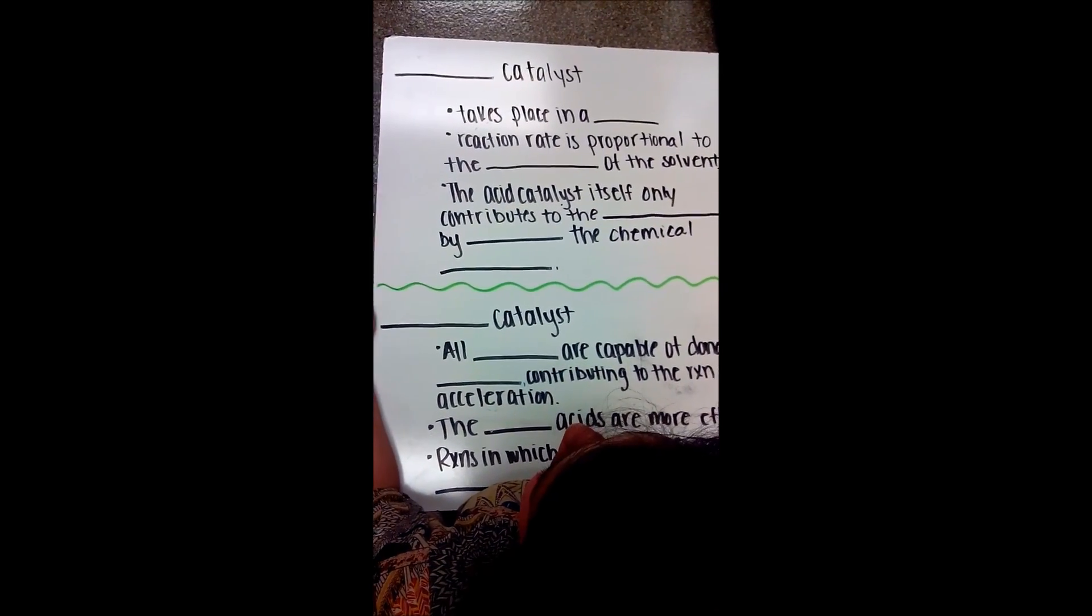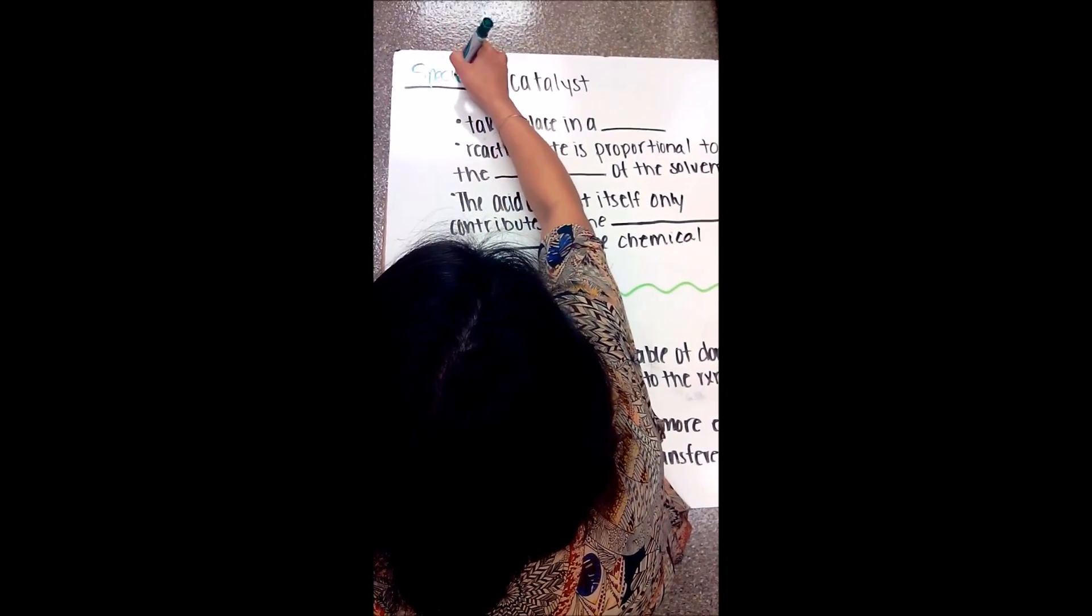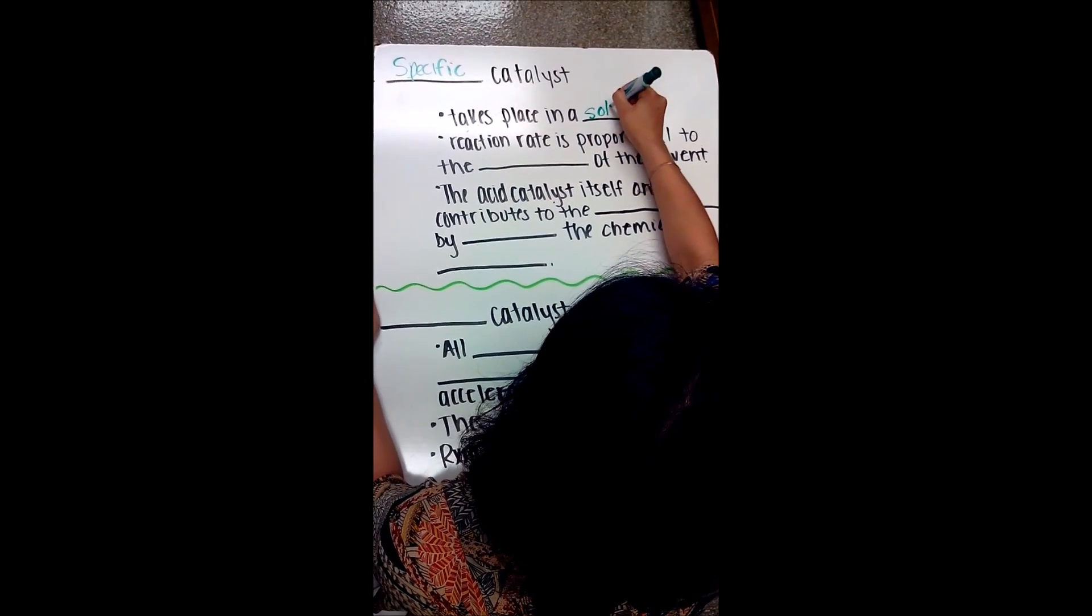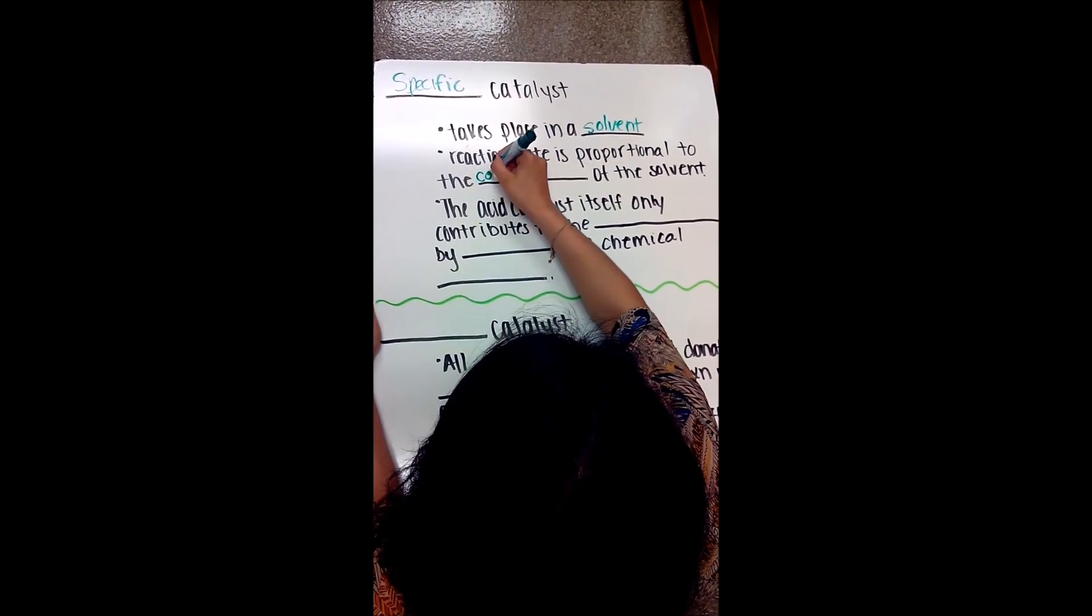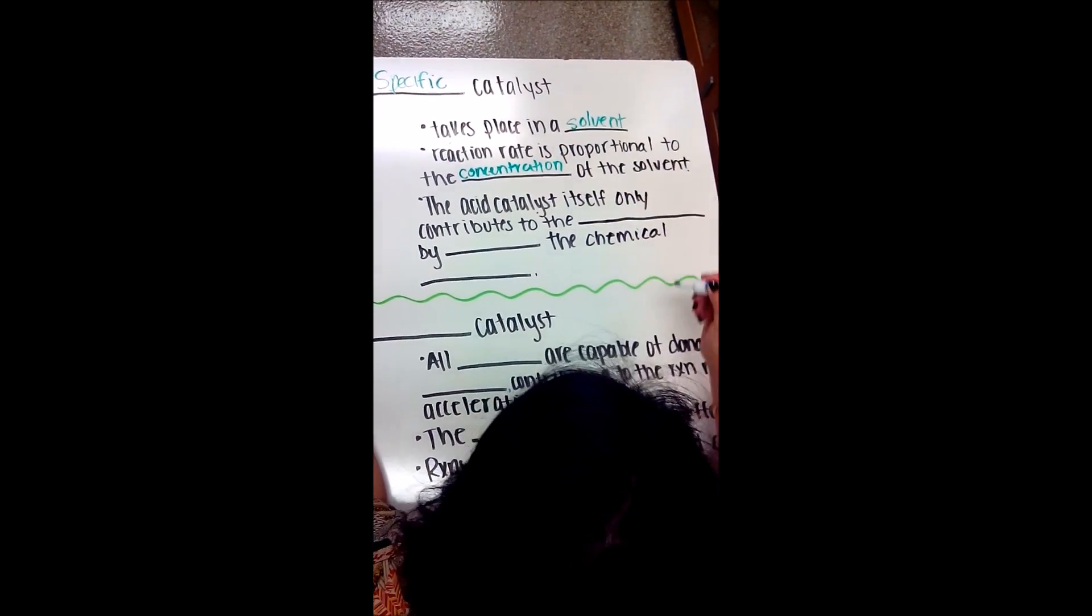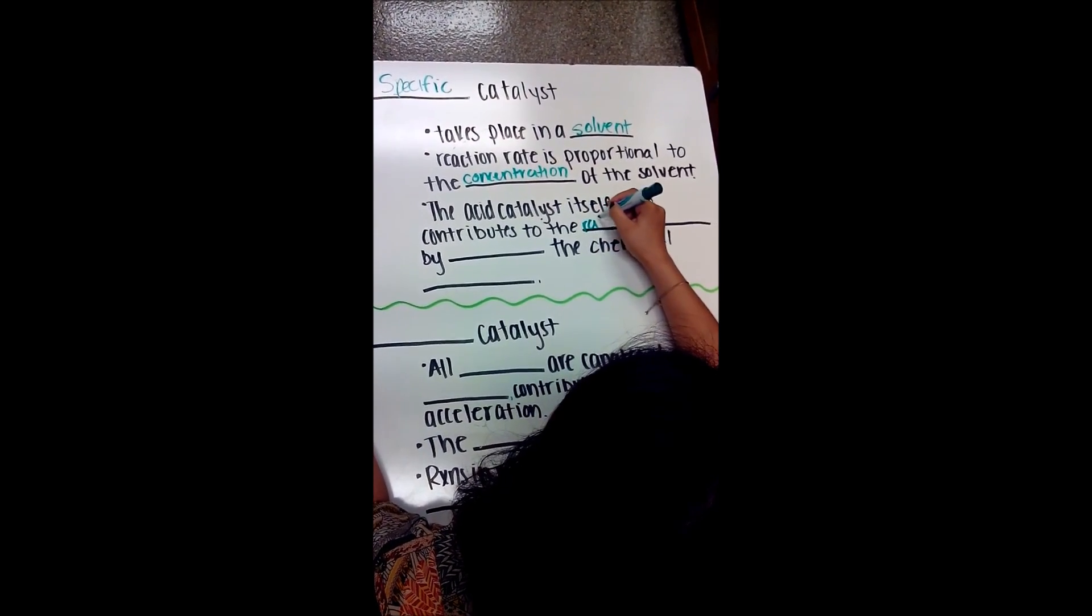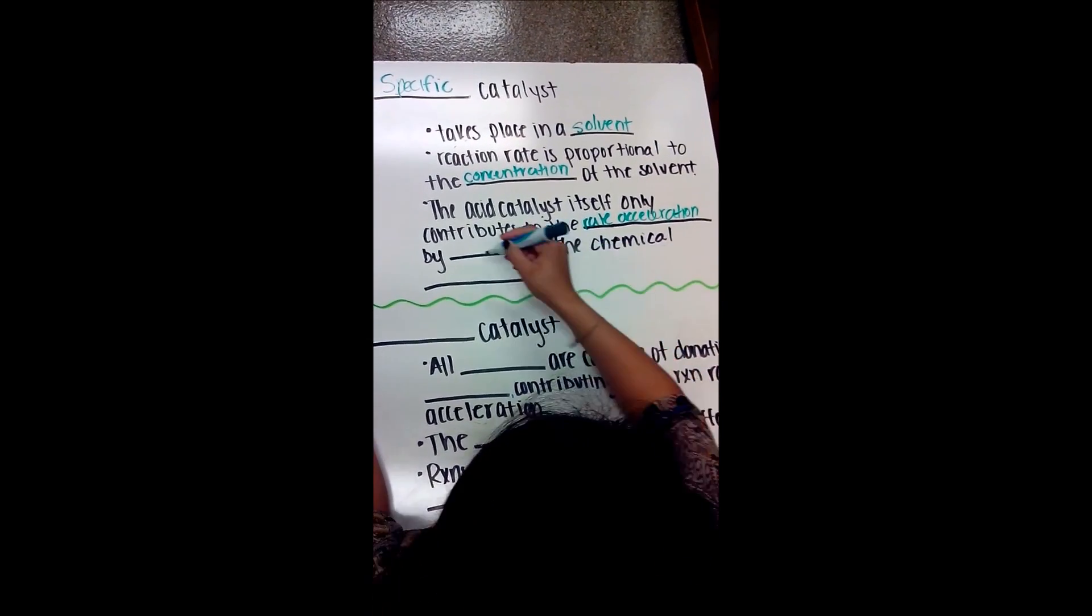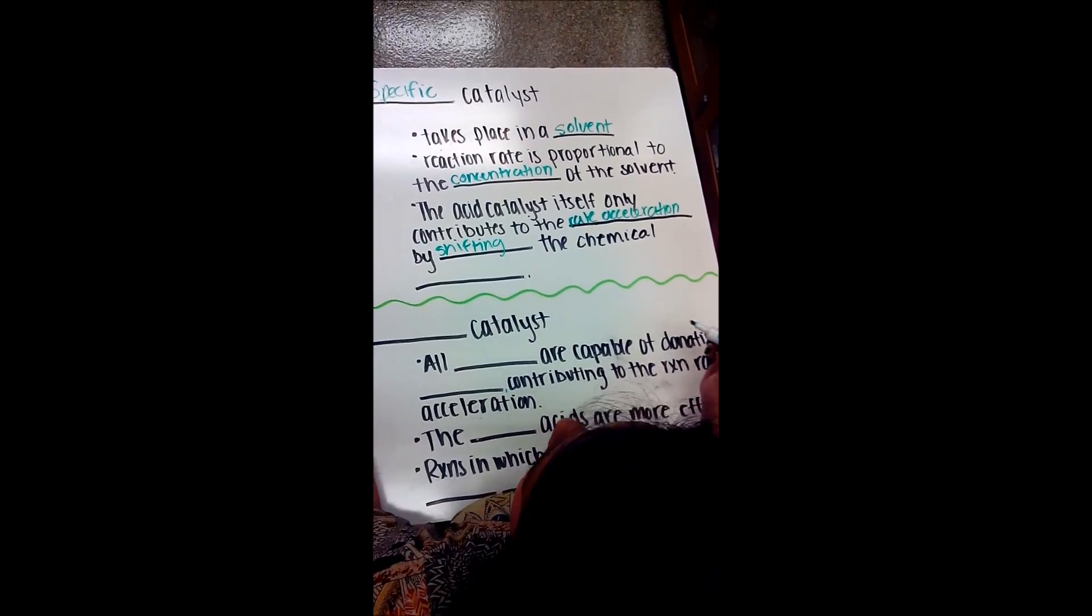There are two different types of catalysts involved in acid-base, one being a specific catalyst, which takes place in a solvent. The reaction rate is proportional to the concentration of the solvent. The acid catalyst itself only contributes to the rate acceleration by shifting the chemical equilibrium.